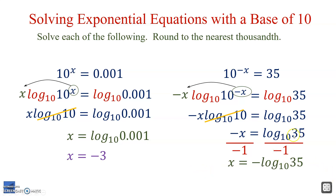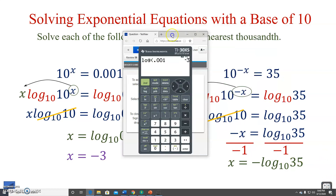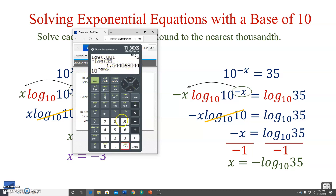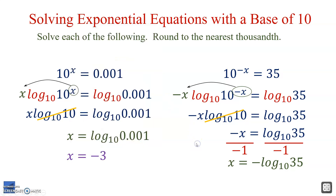Notice it's not the log of negative 35 — the negative is applied to the entire expression. Negative log 35 gives us approximately negative 1.544. We can verify: 10 to the negative negative 1.544 — negative times negative is positive — and we do get 35. So the answer is negative 1.544 rounded to the nearest thousandth.